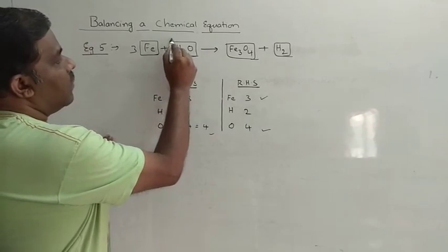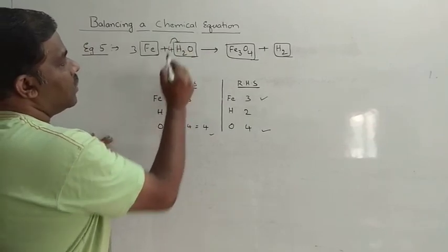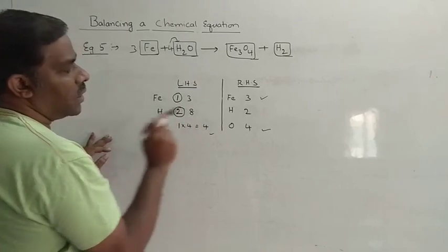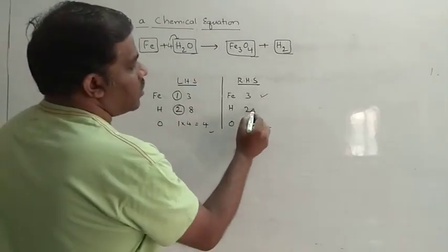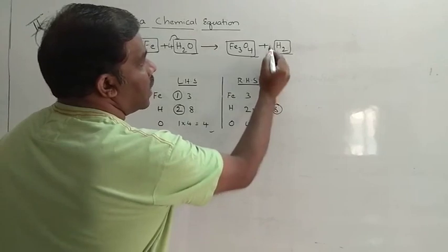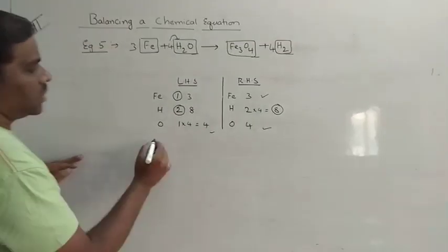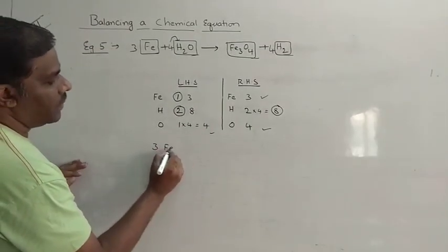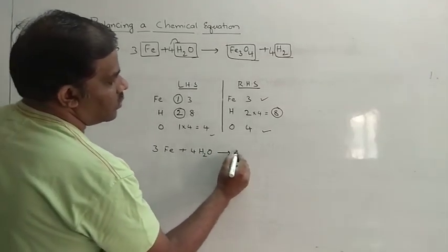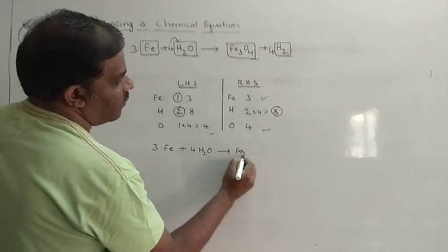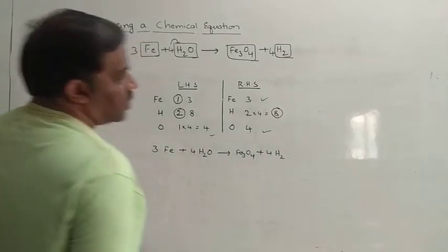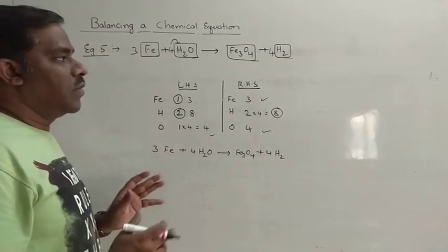But now the number of hydrogens on the left becomes 8. So to balance hydrogens on the right, we multiply H2 by 4. So the balanced equation is: 3Fe plus 4H2O gives rise to Fe3O4 plus 4H2.